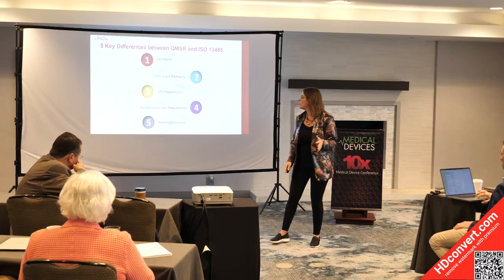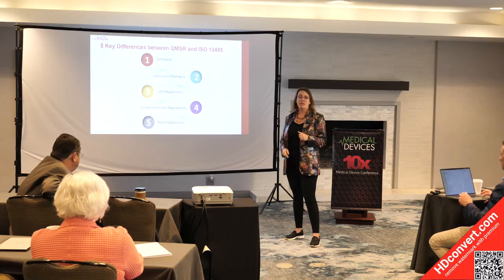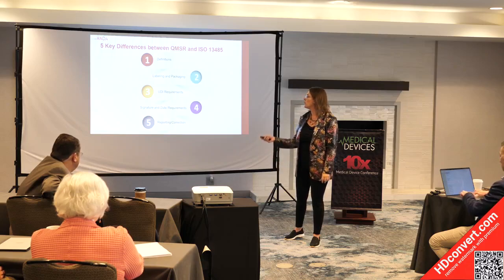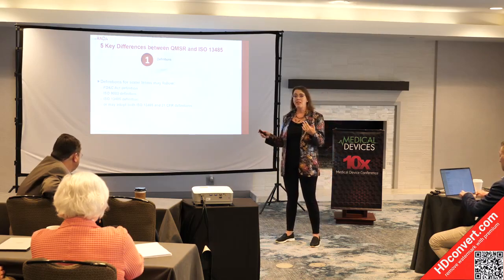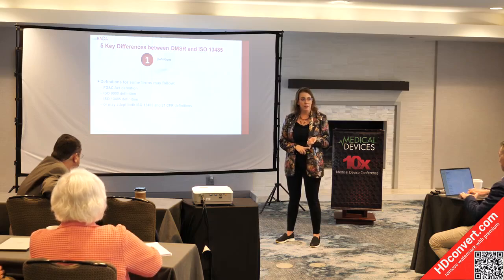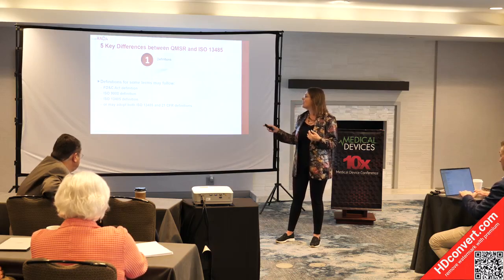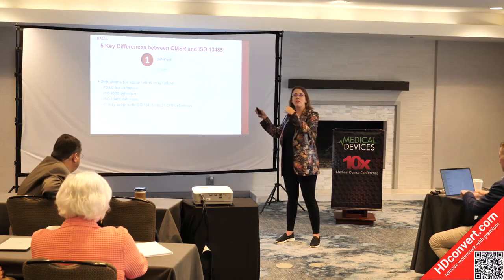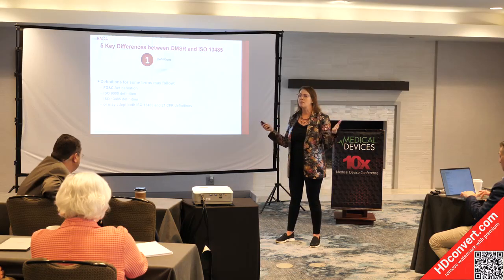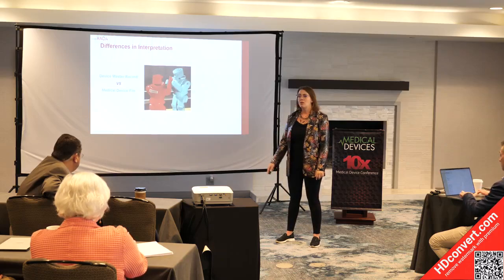The five big key differences are: definitions, labeling and packaging, UDI, signature and date requirements, and the concept of reporting, correction, and removal in the US. On definitions, it's more than just semantics — you have to consider the FD&C Act, which sometimes takes precedence over the ISO 13485 and ISO 9000 definitions. There are also other 21 CFRs where those definitions may take precedence, and sometimes both apply.